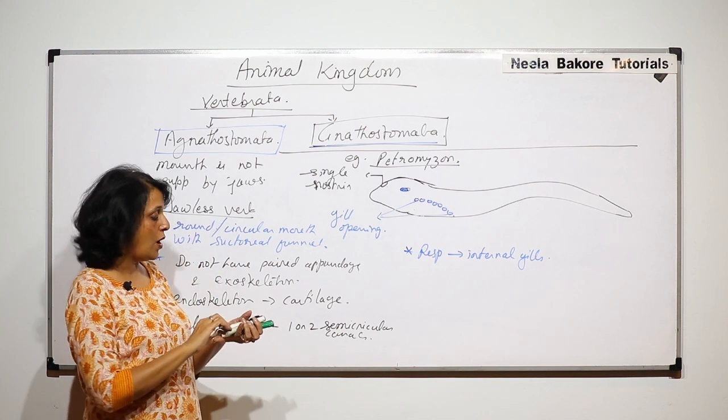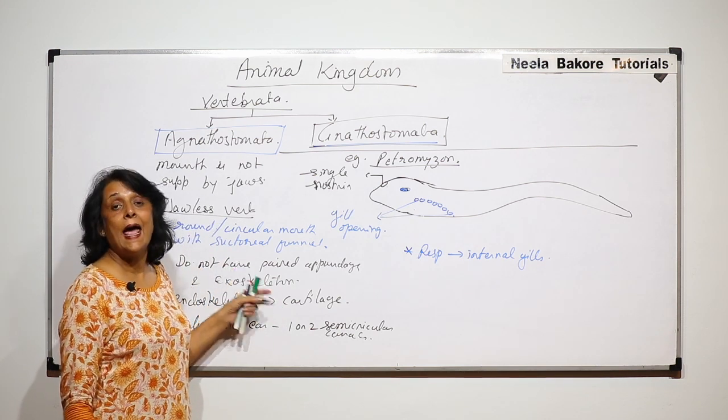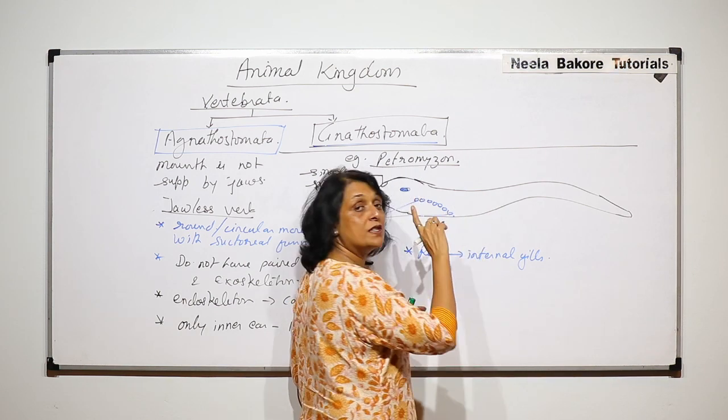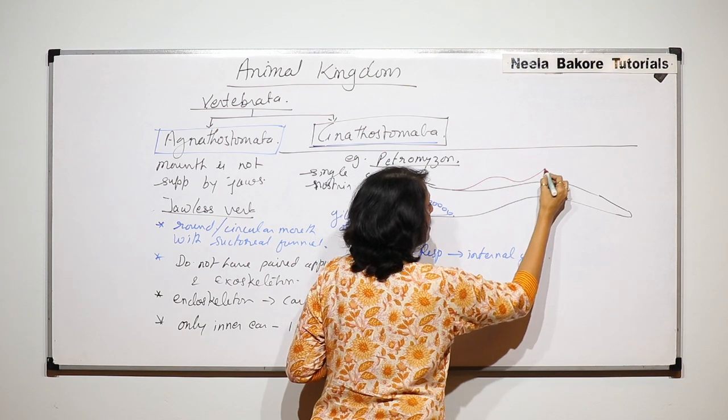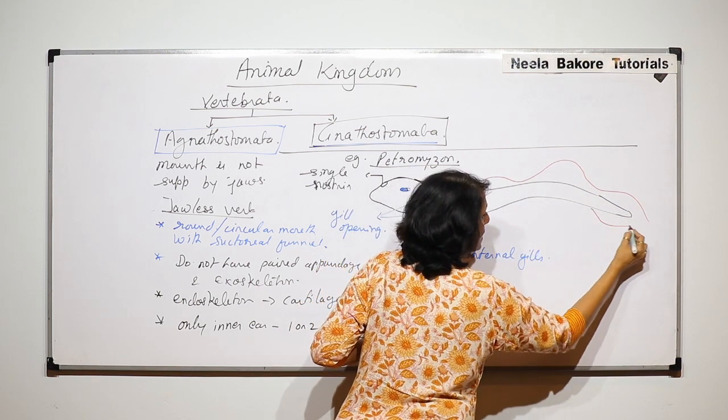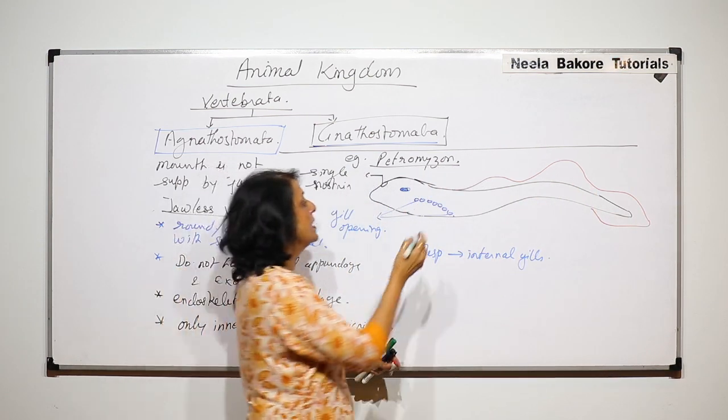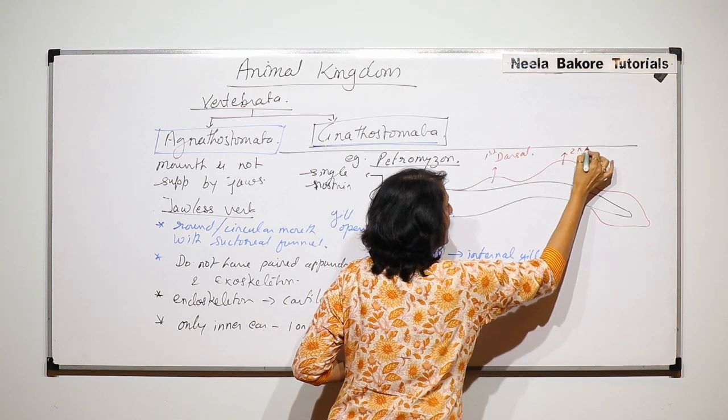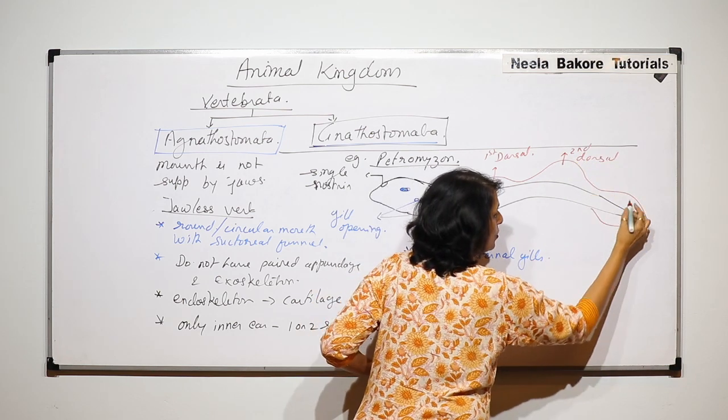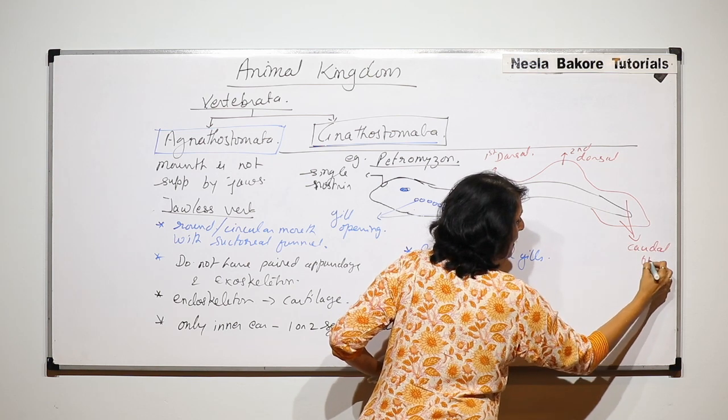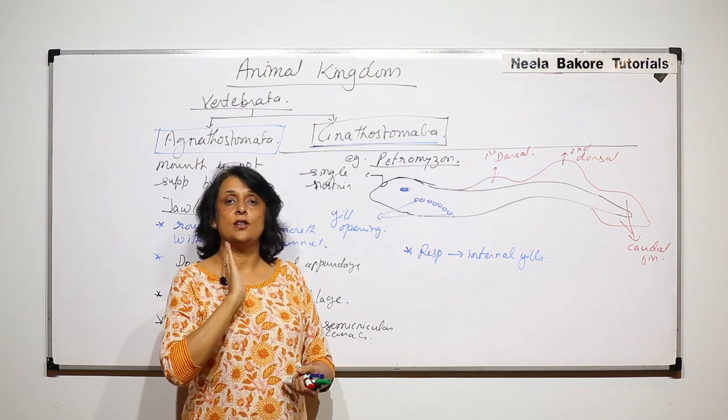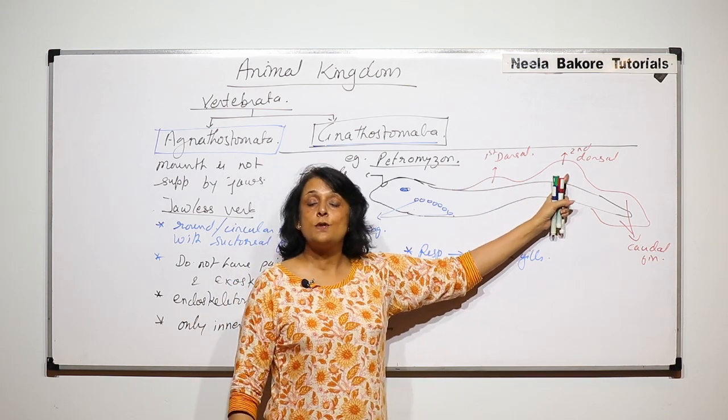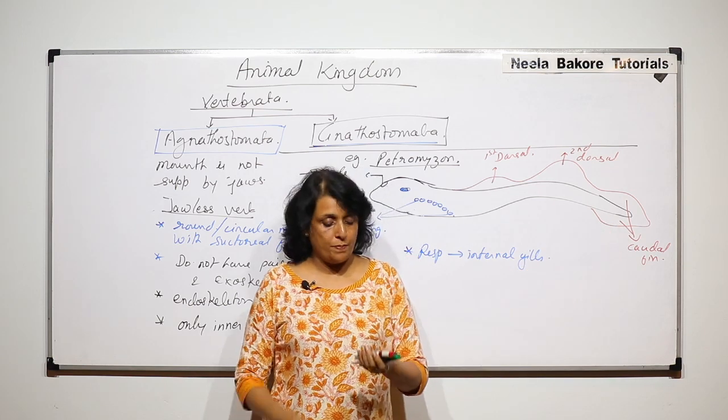We have said that they do not have exoskeleton but endoskeleton is there and paired appendages are absent. So unpaired appendage is present and that unpaired appendage is a fin which is a median fin. One median fin is divided into three parts. This is the first dorsal fin, this is the second dorsal fin, and this together would form caudal fin.